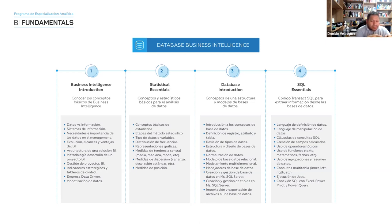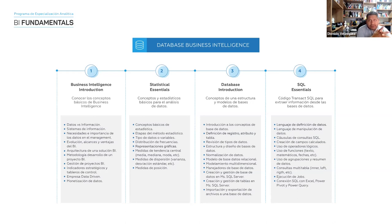We start from basic code — simple operations, mathematical operations, date functions, text functions — and how to join two or three tables. What we do classically in Excel with VLOOKUP is nothing more than crossing two tables of information, doing joins. So in this SQL Essentials course, we cover all the code and functions of the SQL language that will allow you to extract, process, and manipulate data.